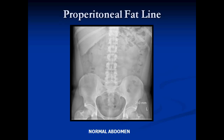Now we're going to talk about the properitoneal fat line. On a normal supine abdomen, you can see an interface between dark and white on either side — this is the properitoneal fat line. On the outside is soft tissue of the abdominal wall; on the inside is fat within the peritoneum. Immediately next to this line is bowel. You can see the large bowel with fecal material immediately adjacent to the properitoneal fat lines on both sides.